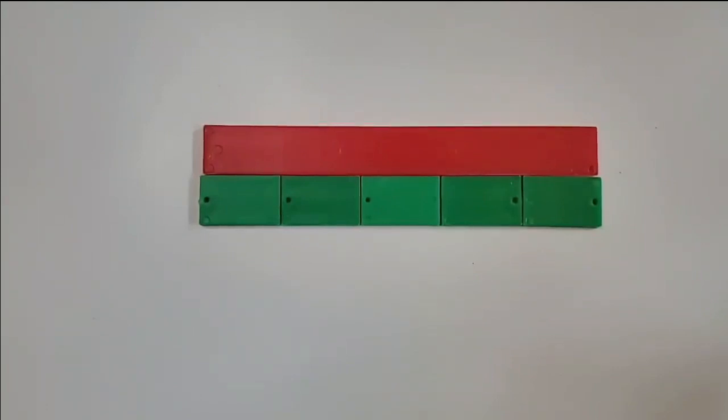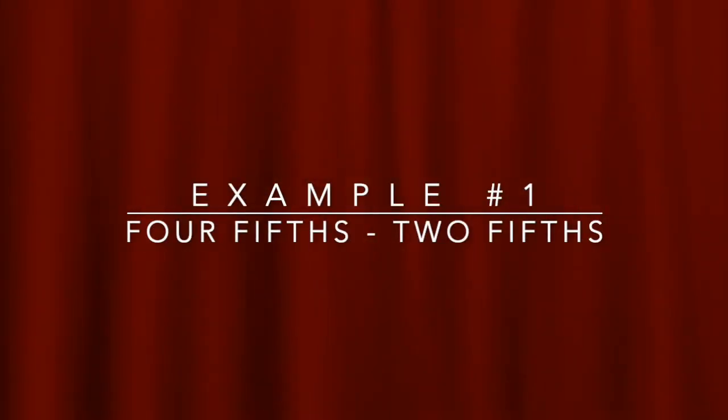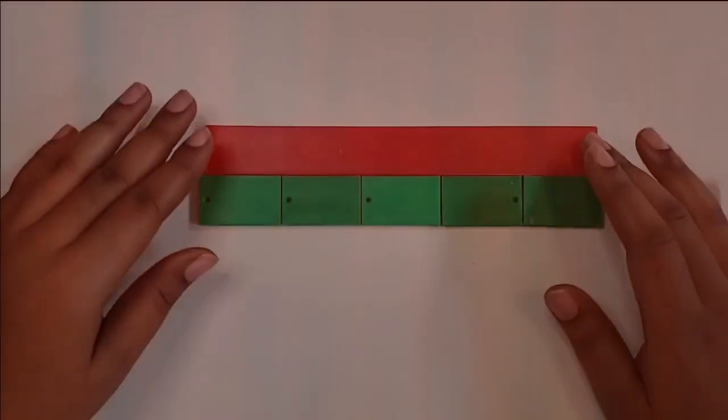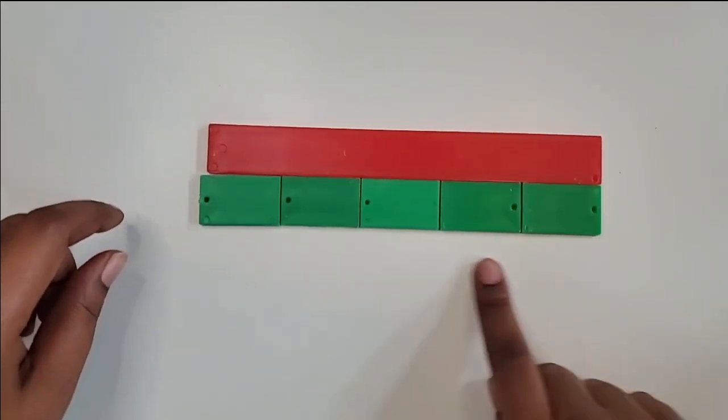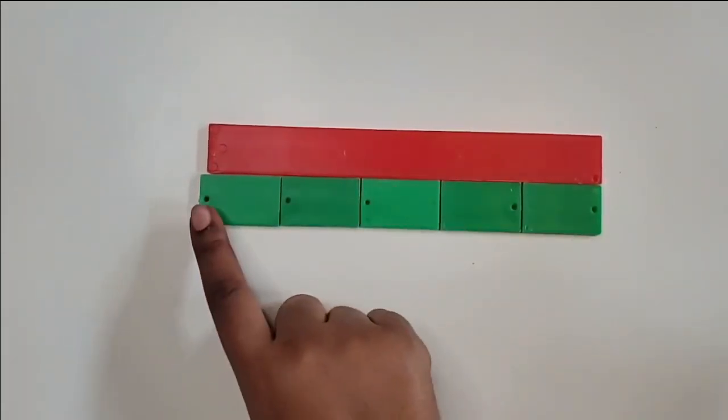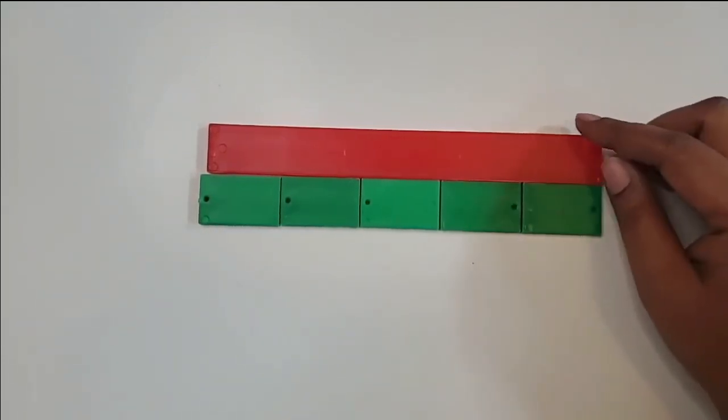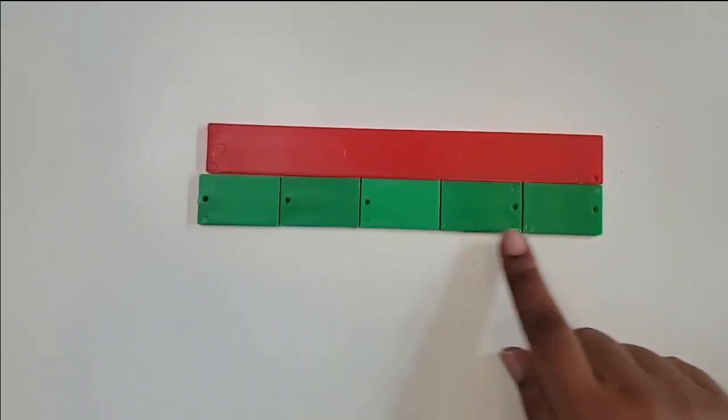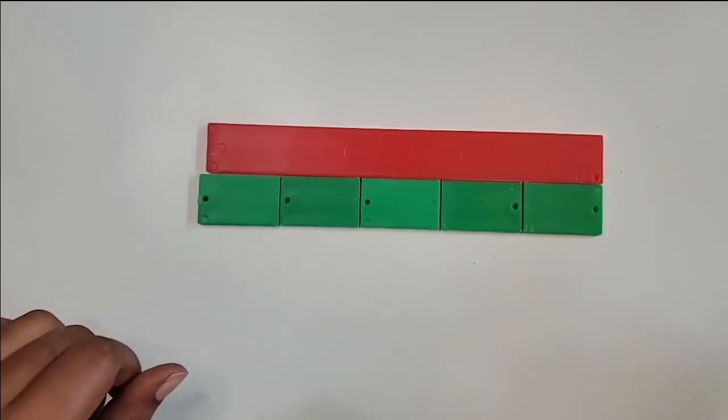In this video I'm going to share with you how to subtract fractions with the same denominator using fraction bars. Here we have our whole and we have some fractions. It takes one, two, three, four, five of these fraction bars or tiles to make up the whole. So since it's five of them these are fifths.